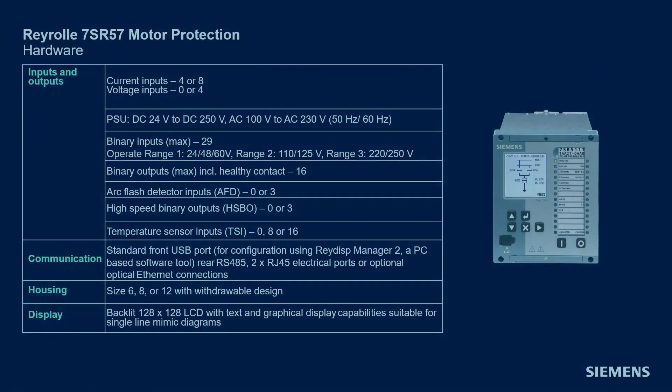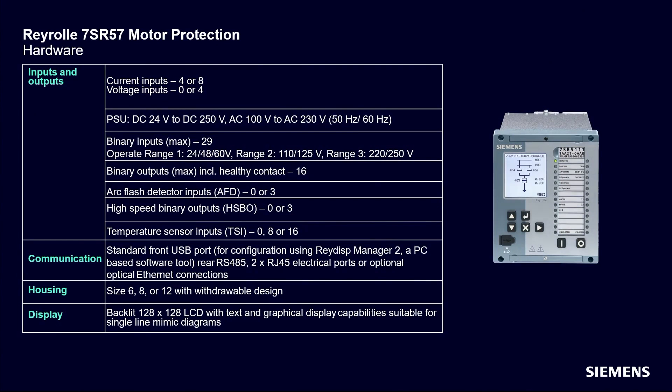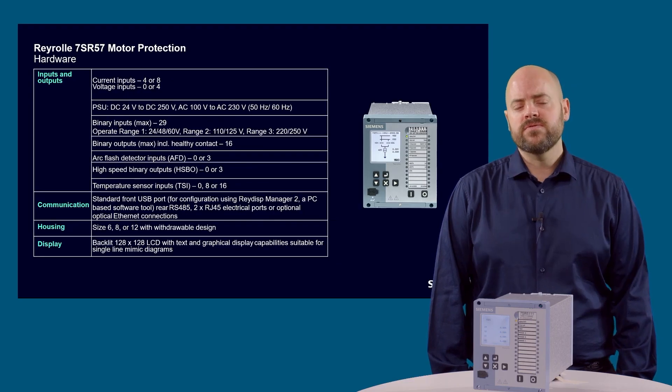The device has a rear RS485 port and dual ethernet ports with either electrical or optical interfaces. Communication protocols include IEC 61850, Modbus TCP, DNP3 TCP and also redundancy protocols. The smaller S6 devices have a case width of 153mm, the next size S8 is 205mm and the largest S12 is 308mm wide. A large graphical display makes it easier to view device information.